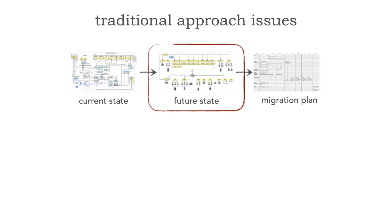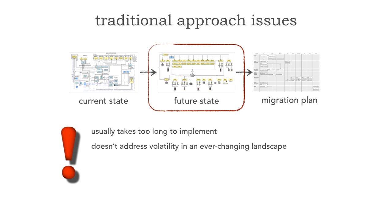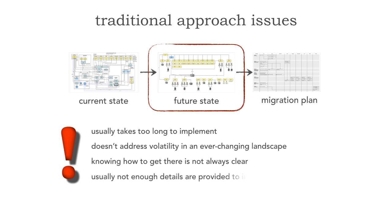There are a few problems and they all go towards this future state. This seems like a very solid, logical way of being able to run initiatives in the business. However, these initiatives usually take too long to implement, and they don't address the volatility in an ever-changing landscape. Knowing how to get to that future state is not always clear, and very rarely are enough details provided to know even how to implement it. And this causes a lot of communication churn. It's really that volatility in an ever-changing landscape which is the death nail to these traditional approaches.